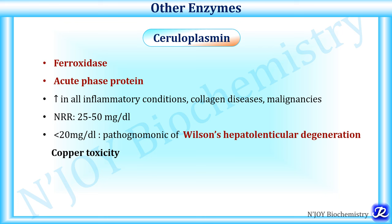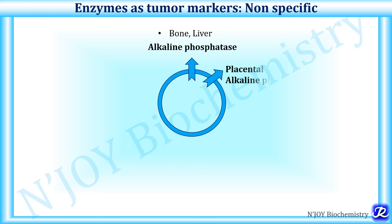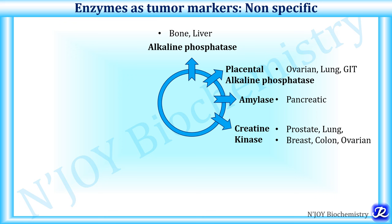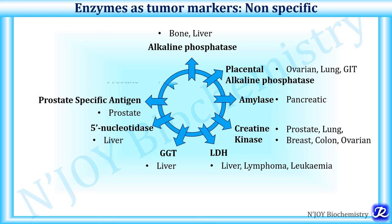Some enzymes are called tumor markers because their presence is indicative of a tumor, though they are non-specific. Alkaline phosphatase is increased in bone and liver cancer; placental alkaline phosphatase is increased in ovarian, lung, and GIT cancers. Increased amylase is seen in pancreatic cancer. Creatine kinase can be increased in prostate, lung, breast, colon, and ovarian cancers. LDH increase is seen in liver cancer, lymphoma, and leukemia. GGT and 5'-nucleotidase increase is seen in liver carcinoma. Prostatic acid phosphatase and PSA are increased in prostate cancer.